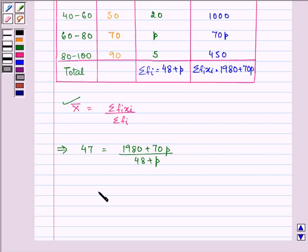Which on simplifying will give us 47 times 48 plus P equal to 1980 plus 70P.